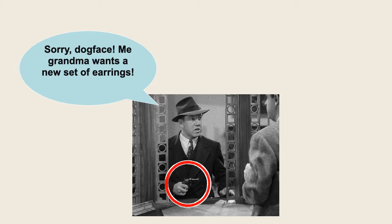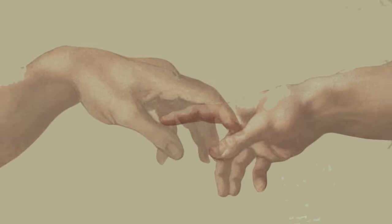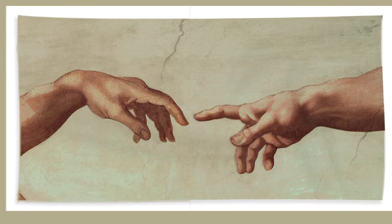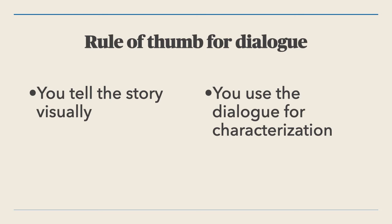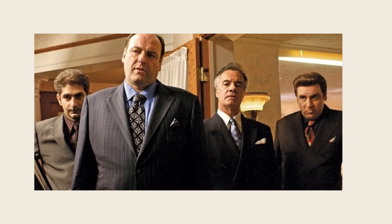Now let's delve deeper into the realm of semantics in movie dialogue. We introduced the rule of thumb stating that in movies you should tell the story by visual means, like the use of thingies, and treat dialogue more like some sort of characterizing noise. A good screenplay consists of good thingies rather than witty dialogue. So let me show you how dialogue can create tension in a scene by what I call the semantic gap.